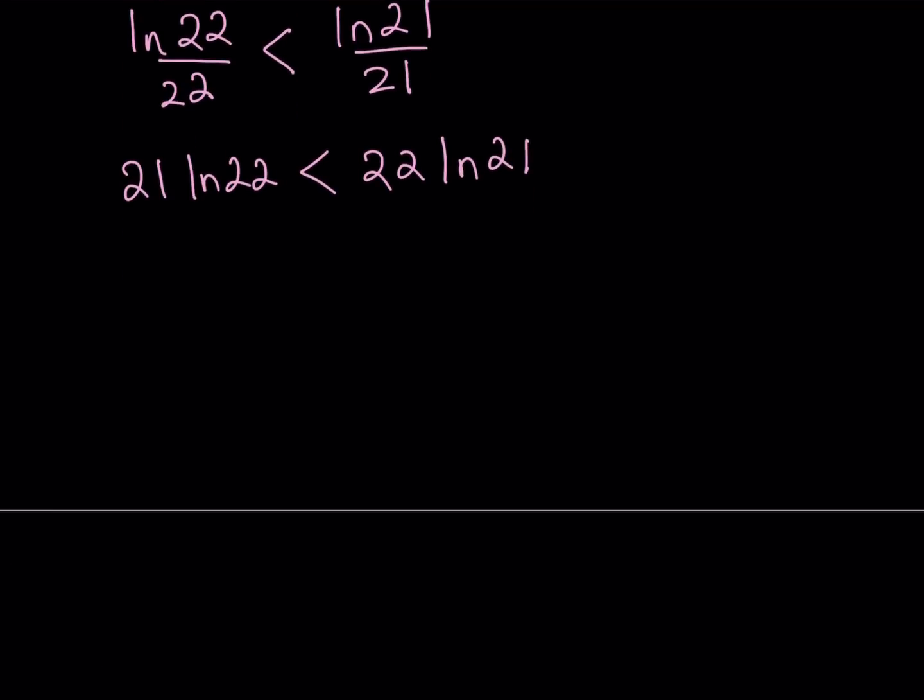This gives us 21 ln 22 is less than 22 ln 21. And then, from here, we're trying to find the largest number. So, let's go ahead and switch sides and write this as 22 ln 21 is greater than 21 ln 22. Of course, they're multiplied. I didn't write the multiplication sign, but they're multiplied.